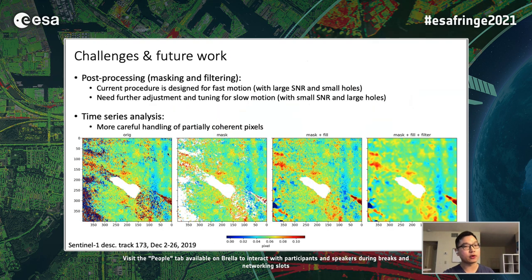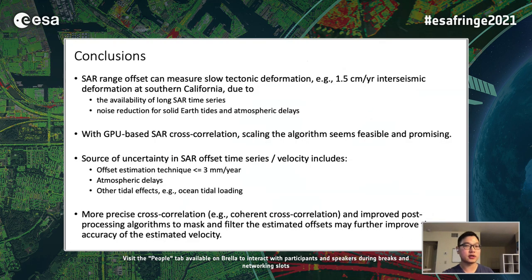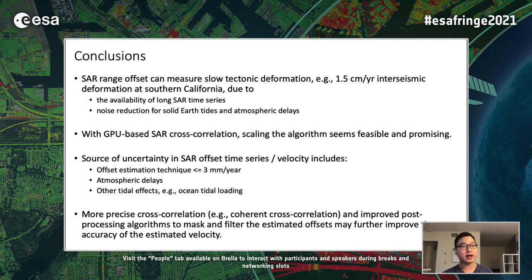In future work, more effort should go into masking and filtering of offsets and more careful handling of time series analysis for partially coherent pixels. In conclusion, yes, we can use SAR offset to measure slow tectonic deformation, enabled by very long time series and noise reduction from solid Earth tide and troposphere. GPU-based SAR cross-correlation makes the algorithm scalable and feasible. The dominant source of uncertainty is atmospheric delay and other tidal effects such as ocean tidal loading.